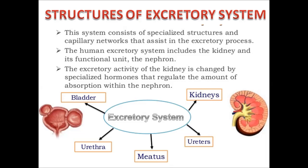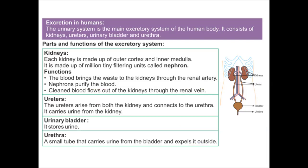The nephron works properly because hormones repeatedly activate and monitor the kidney — for example, the adrenocorticotropic hormone, which is one of the major hormones that helps the kidney work properly. The excretory system includes the kidney, ureters, urethra and bladder. The urinary system is the main excretory system of the human body, consisting of kidneys, ureters, urinary bladder and urethra.